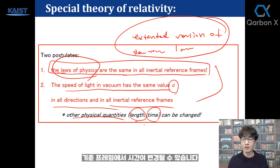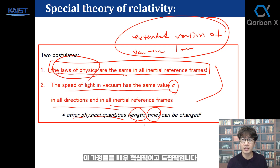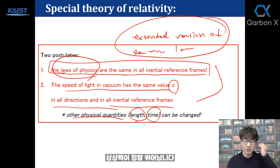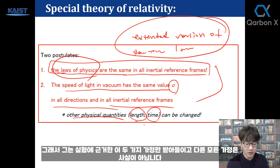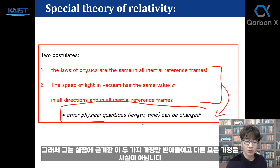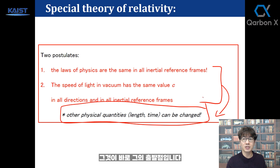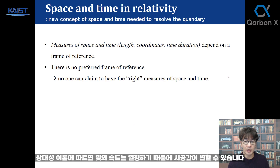Time can change between reference frames — so in a moving car, time is different than what we measure here. And length is different. That's very revolutionary. His imagination was very good. He only accepted these two postulates based on experiment, and all other previous perceptions he thought might not be true. That was the starting point. So according to relativity theory, spacetime can change now.